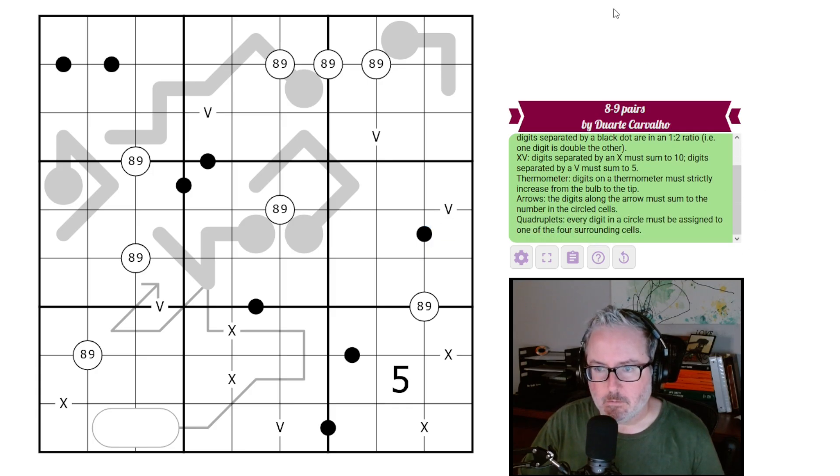Then we've got thermos. Digits on a thermometer must strictly increase from the bulb to tip. So this guy here is a bulb, this is a tip. These will increase as they go in any way. As long as the digits are increasing, it's good.